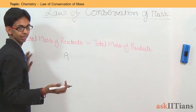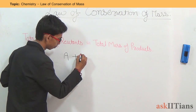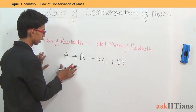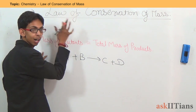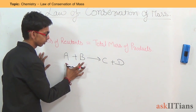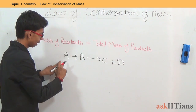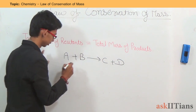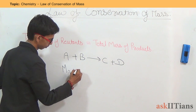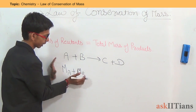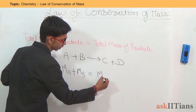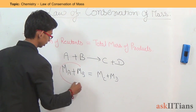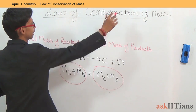Let's say A is any reactant which is reacting with B to form product C and product D. Then, according to the law of conservation of mass, the total mass of reactants should be equal to the total mass of products. That is, mass of A plus mass of B equals mass of C plus mass of D — this is the total mass of reactants equal to total mass of products. This is the law of conservation of mass.